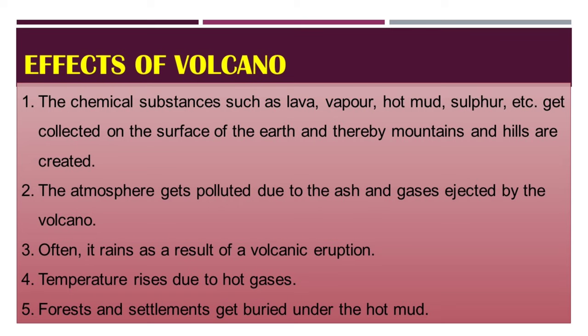Now let's see the effects of a volcano. First, chemical substances such as lava, vapor, hot mud, sulfur, etc. get collected on the surface of the earth, and thereby mountains and hills are created. Second, the atmosphere gets polluted due to the ash and gases ejected by the volcano.